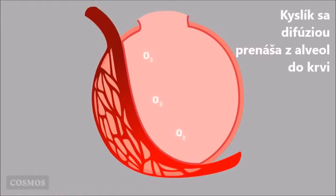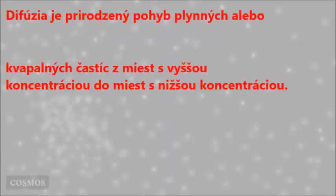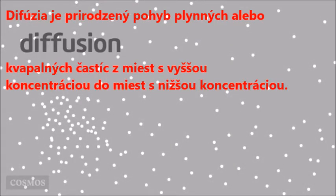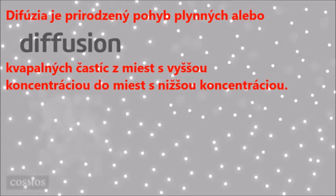Oxygen diffuses from the alveoli into the blood and carbon dioxide diffuses from the blood into the alveoli. Diffusion is the natural movement of gas or liquid particles from an area of higher concentration to an area of lower concentration.